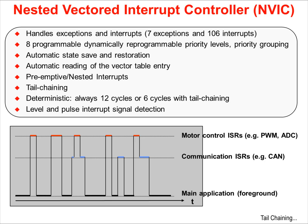This device has 7 system level exceptions and 106 peripheral interrupts. It has automatic state save and restore for entering and exiting interrupt service routines, as well as automatic reading of the vector table entry to quickly facilitate this process. One of the first rules you learn when programming interrupts on a microcontroller is not to nest interrupts.